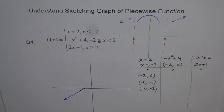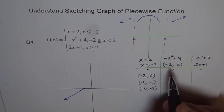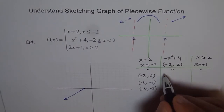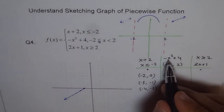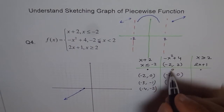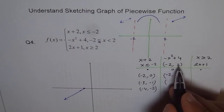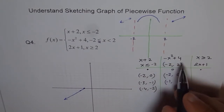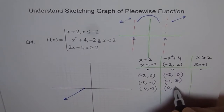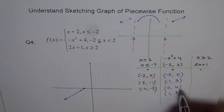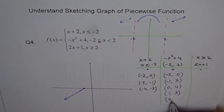Now let's do the center part: minus x squared plus 4, a parabola opening downwards. At x equals minus 2 we have a hole. Plugging in: minus 2 squared is 4, minus 4 plus 4 is 0, so the hole is at the point (minus 2, 0). At x equals minus 1 we get 3. At x equals 0 we get 4. At x equals 1 we get 3 again — there is symmetry. At x equals 2 we get 0.